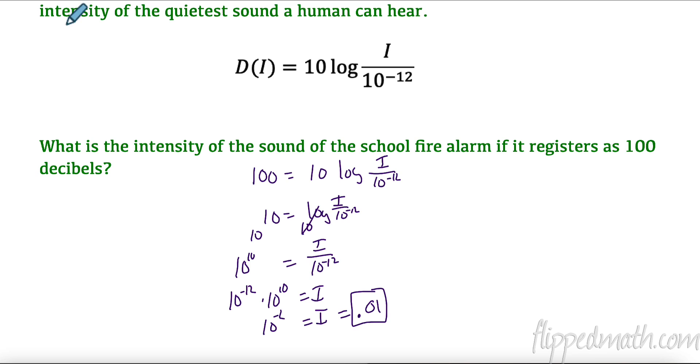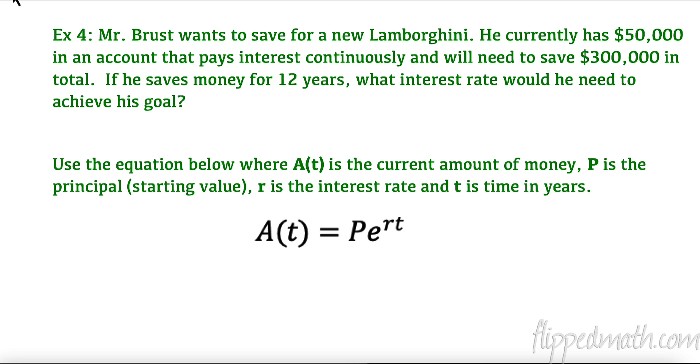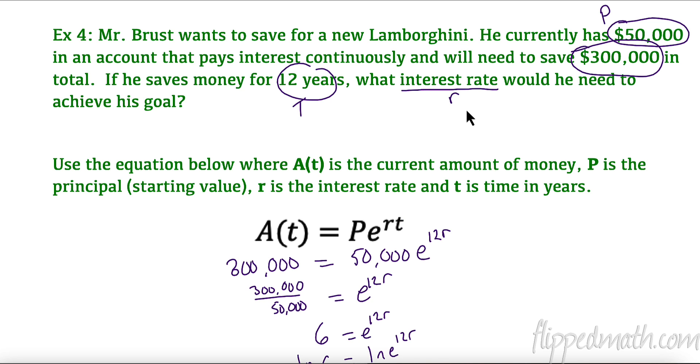I want you to pause the video and try this one. Worst case scenario, put what you can in the formula. This talks about interest and things like that, very important topic. Mr. Bruss wants to save for a new Lamborghini. He currently has fifty thousand dollars, that's called principal. Principal is what we start with when we're investing in an account that pays interest continuously. That's why we're using the P e^(rt) formula, that means continuously compounded. He'll need to save three hundred thousand dollars in total for that Lamborghini. If he saves money for 12 years, that's our time, our t value, what interest rate would he need to achieve his goal? How much does this rate need to be so that he can actually get to three hundred thousand dollars just starting with fifty thousand dollars after 12 years?